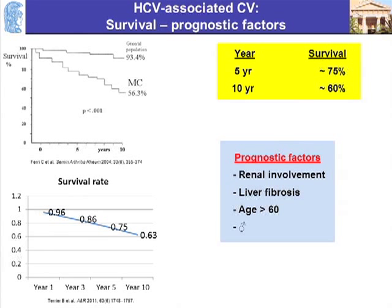What is the prognosis of the disease? There are now two studies — one from France and another from Italy — showing about the same results. If you look at the 10-year survival, it's about 60%, which is not so good even with the therapies available at that time. The most important prognostic factors are elevated creatinine at presentation and, importantly, advanced liver fibrosis. It appears that liver disease by itself is one of the most important prognostic factors.